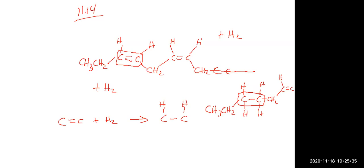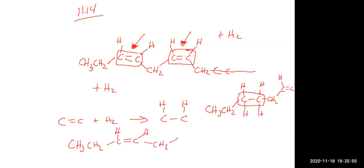Another isomer would be not to make that first double bond a single bond, but to turn the second double bond into a single bond instead. And then everything would be kind of the same at the beginning, this first one would still be double bonded, and then this second one would end up being a single bond, and then the rest of all those carbons attached there would follow.